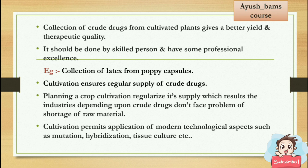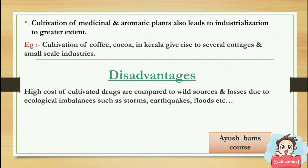Collection should be done by skilled people with professional excellence — for example, collection of latex from poppy capsules. Cultivation ensures regular supply of crude drugs; planning a crop regularizes supply, so industries depending on crude drugs don't face shortage of raw materials. Cultivation also permits application of modern technological aspects such as mutation, hybridization, and tissue culture.